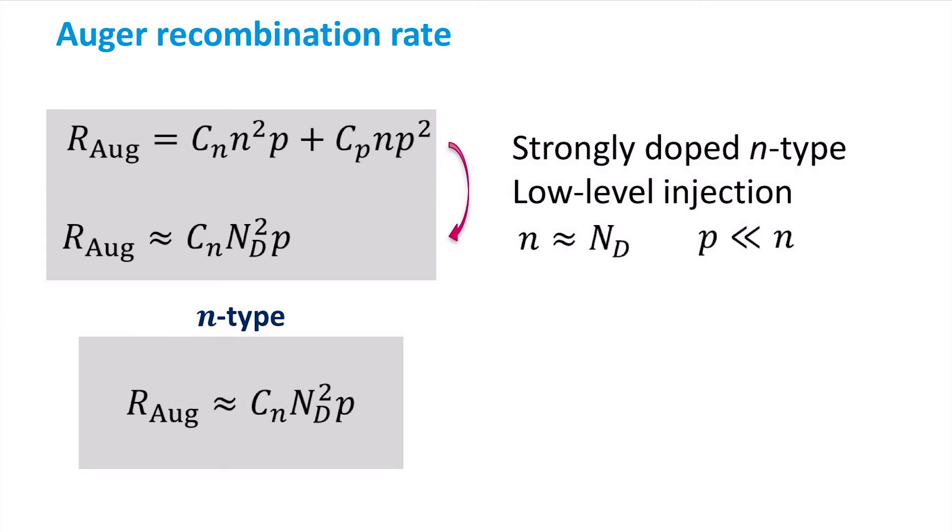This leads to an Auger recombination rate that is dominated by the EEH process. Therefore, this simplified expression can be used to calculate the Auger recombination rate for N-type materials.